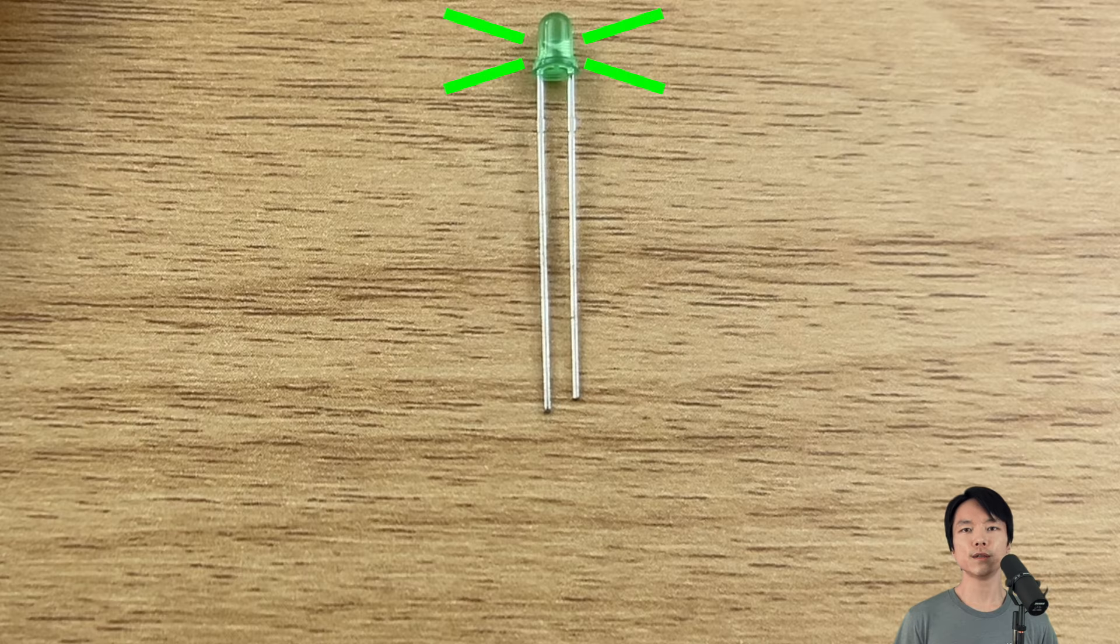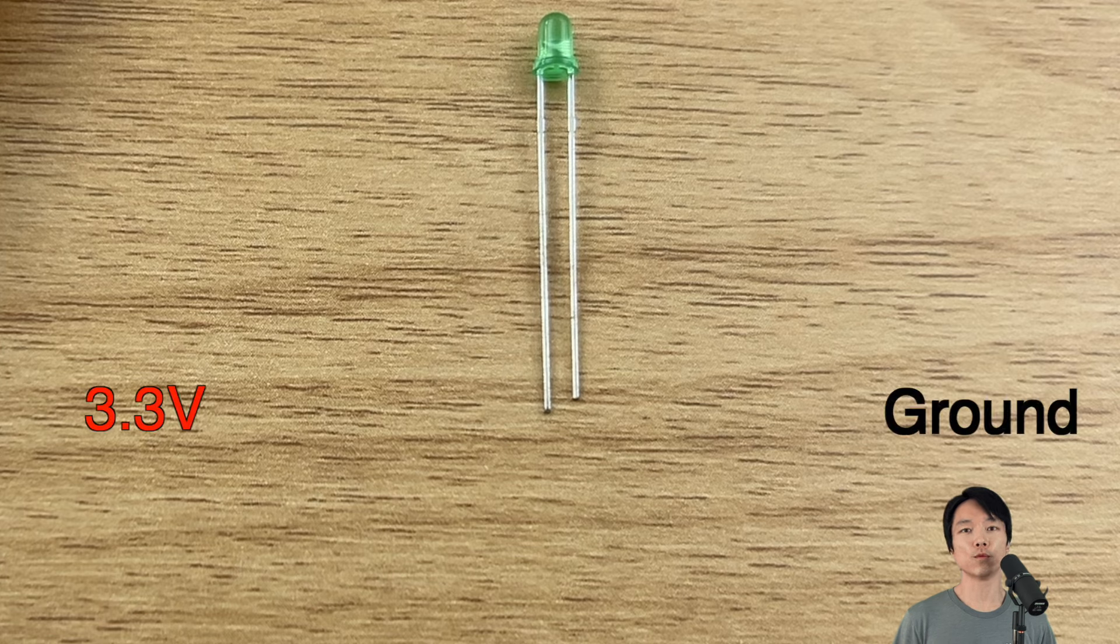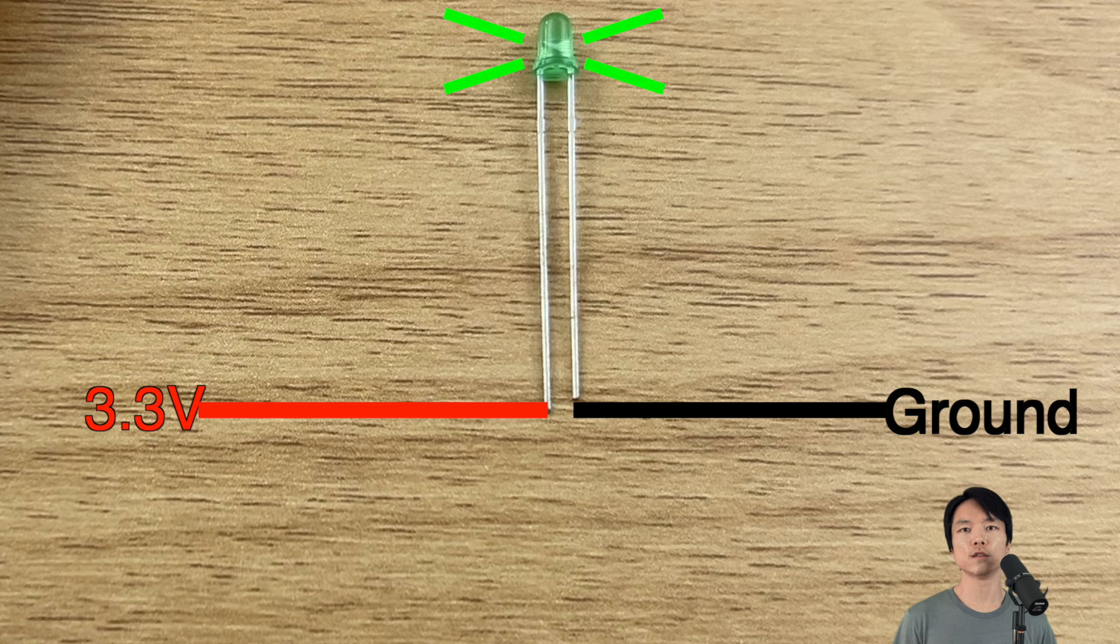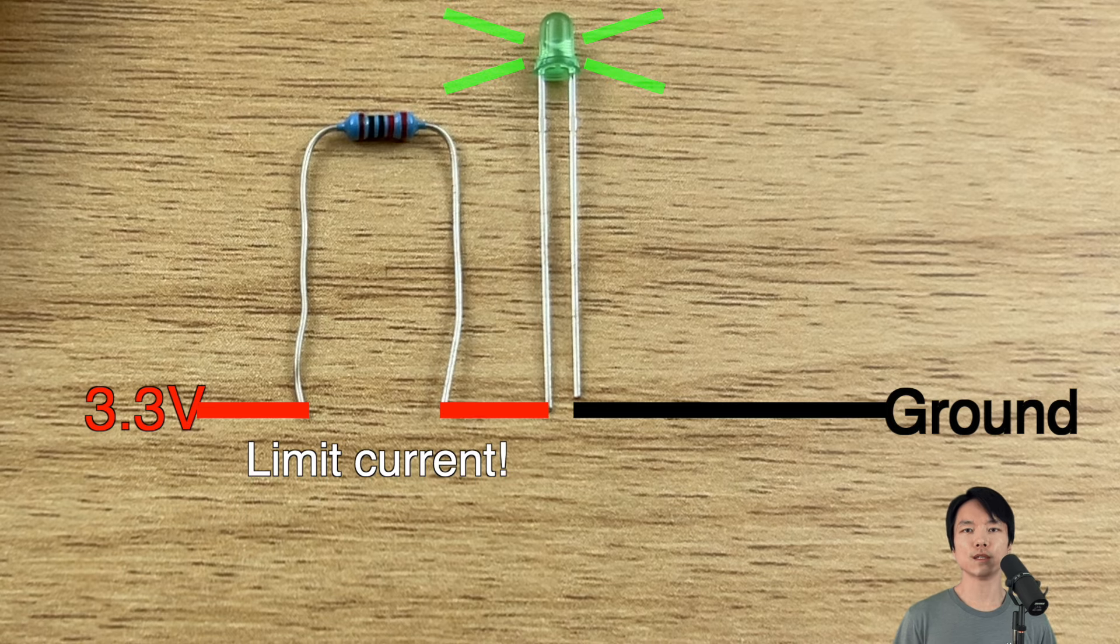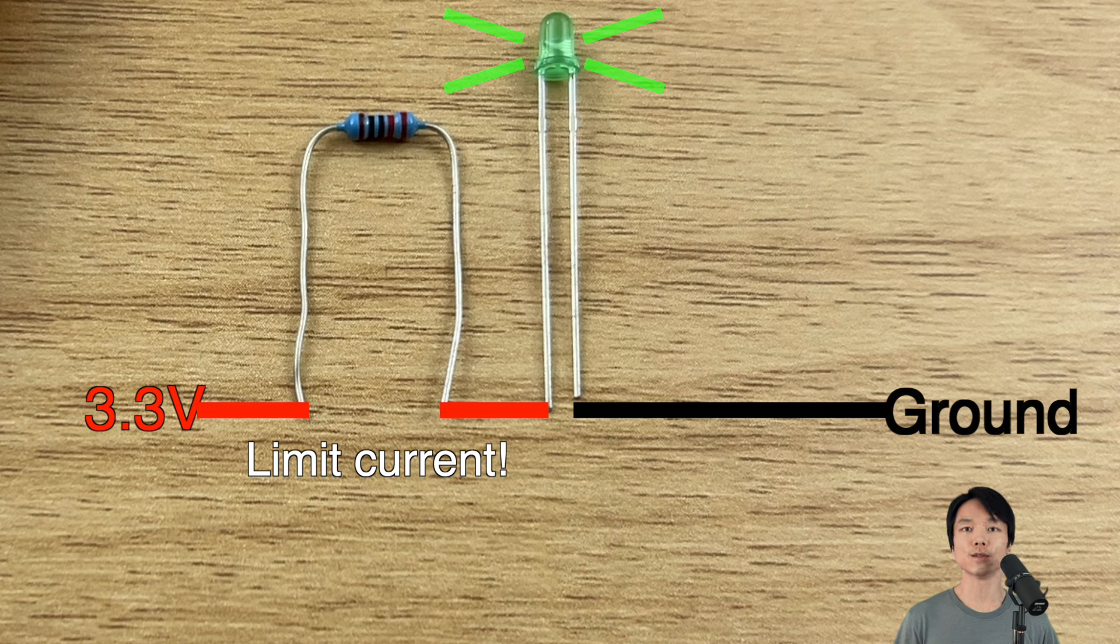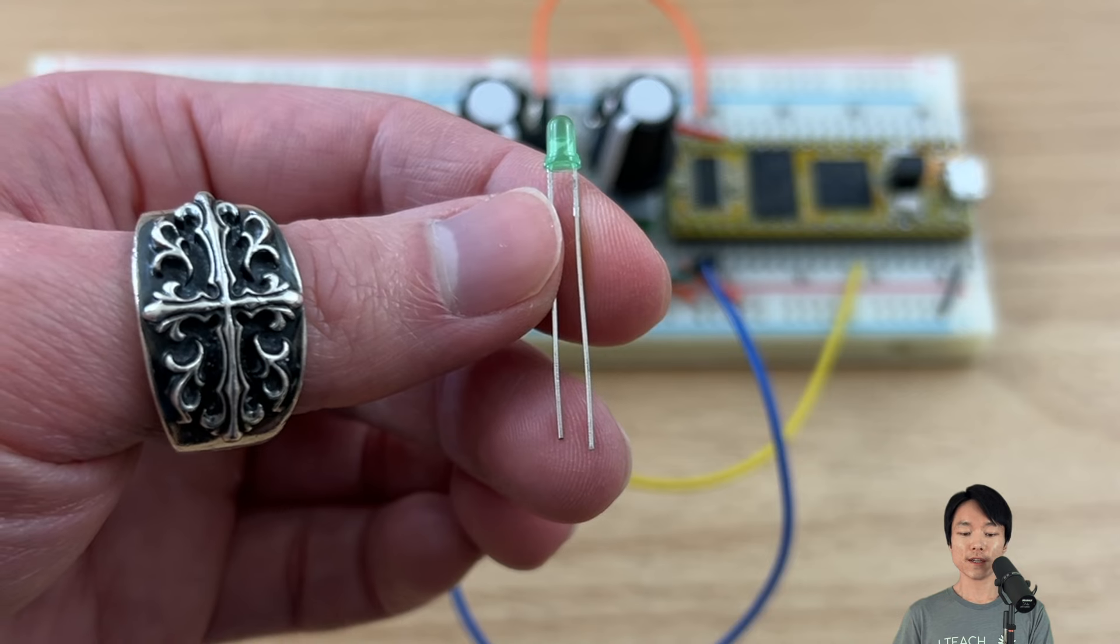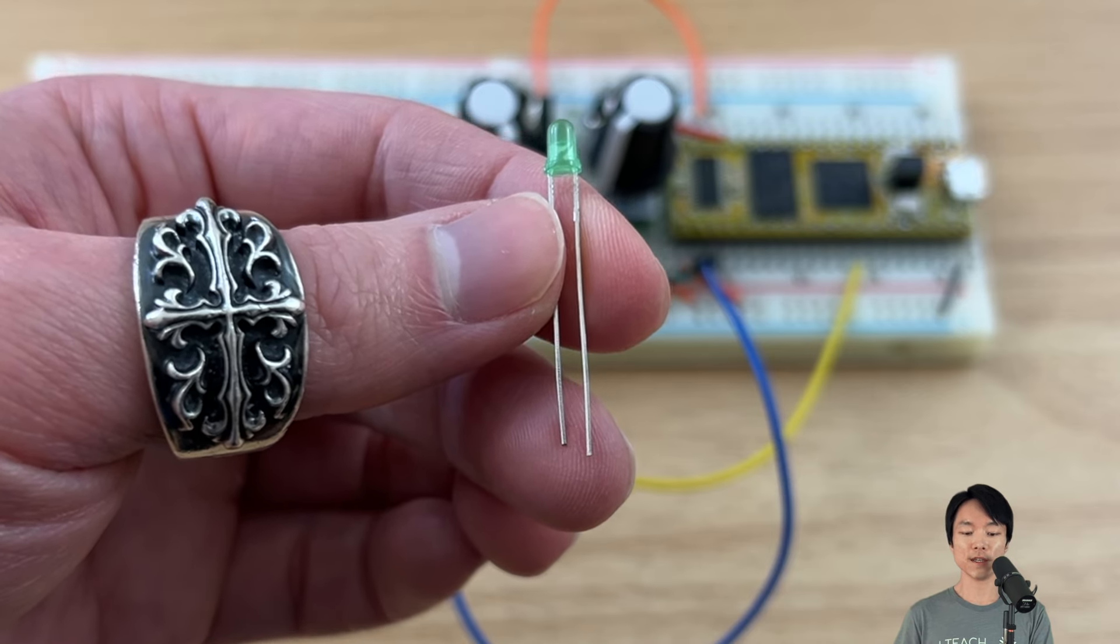LED is a commonly used component that turns brighter when there is more current running through it. In order for current to run through, we need to connect one leg to positive power and the other leg to ground. And we also need a resistor to limit the excess current in order to prevent the LED from burning out. Okay, let's add an LED to our breadboard to see it in action.